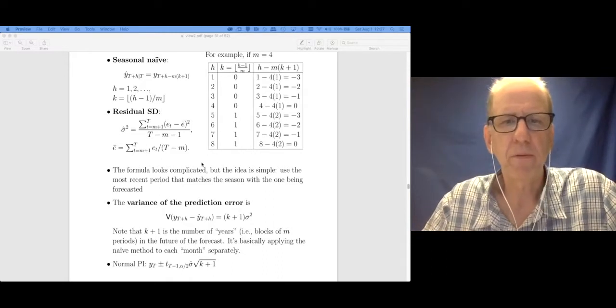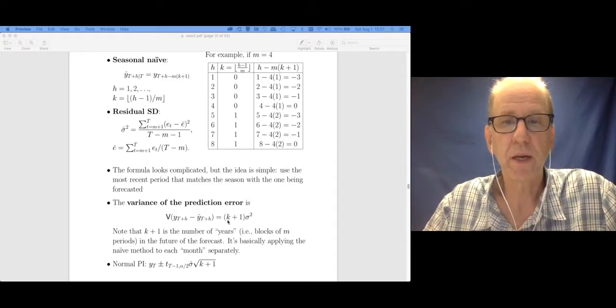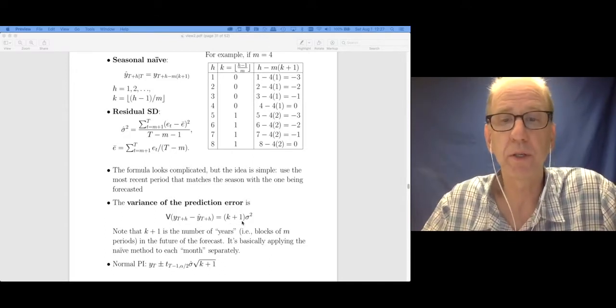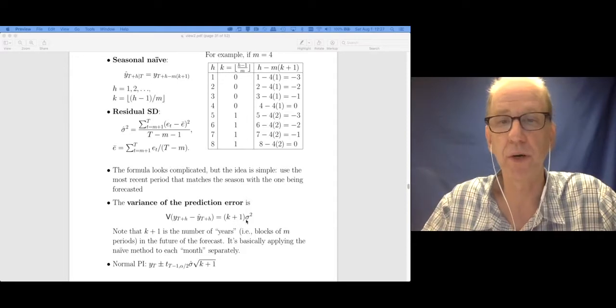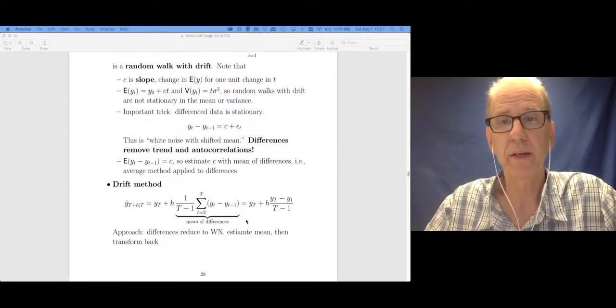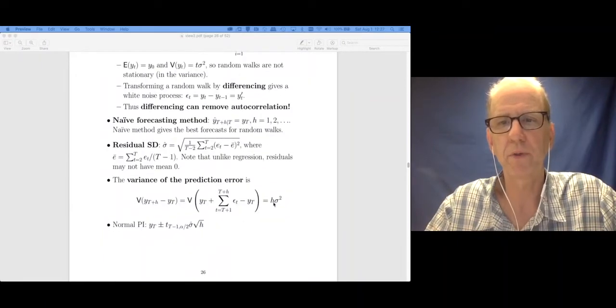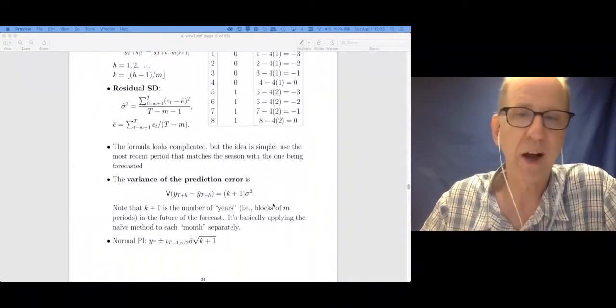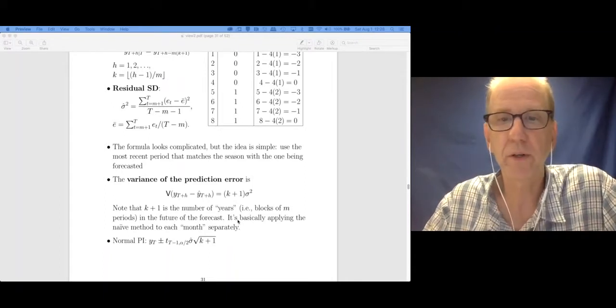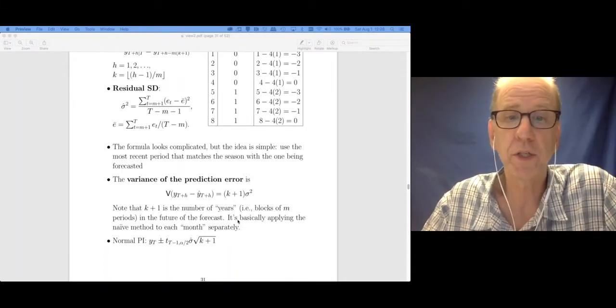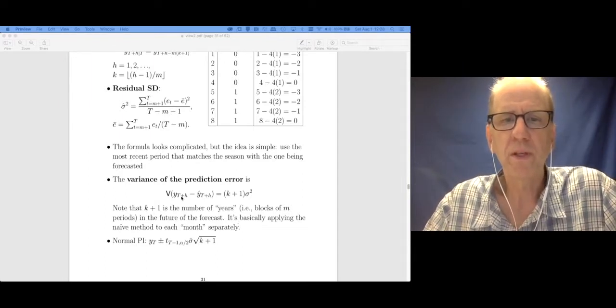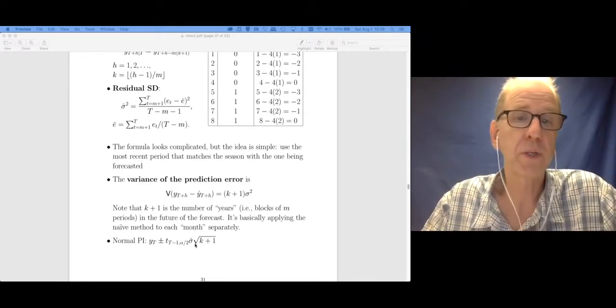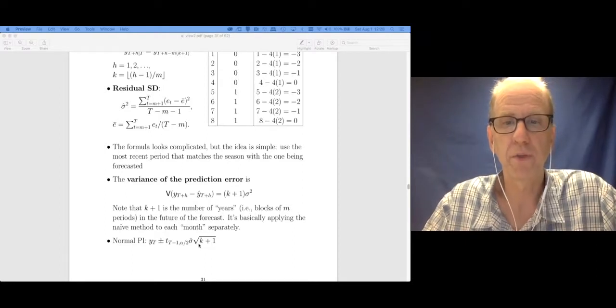The variance of the prediction error that we've been using is how many of these years or blocks of M periods do I go out into the future, and so that's simply K plus 1 times sigma squared. That looks a whole lot like what we had for the basic naive forecast. This K plus 1 in our case is just how many years out. It's basically applying the naive method to each month or quarter separately. With this variance of the prediction error derived, we get the normal prediction interval as we did before, just dropping in the square root of this quantity.